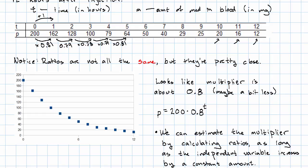We can estimate our multiplier by calculating the ratios and seeing what they're all close to. This is not a real precise method, but it gives us an estimate. Of course, we can only do that if our independent variable is increasing by a constant amount each time.